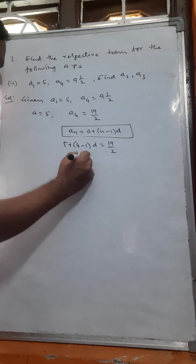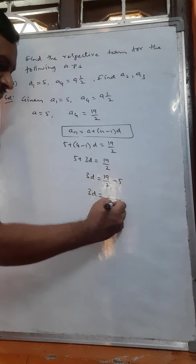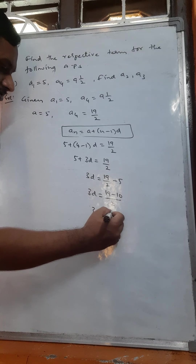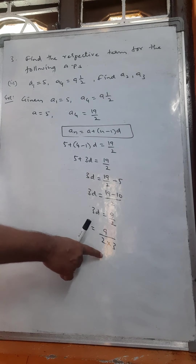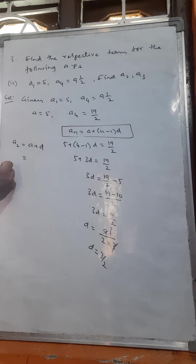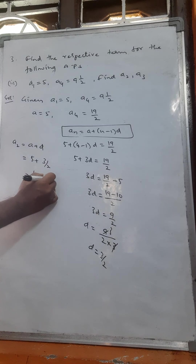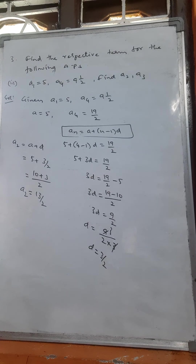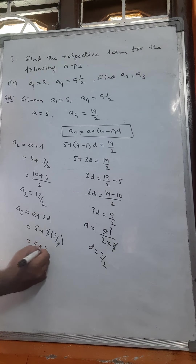Now find a2 and a3. a2 is equal to a plus d: 5 plus 3 by 2. LCM is 2, giving 10 plus 3, that is 13 by 2. So a2 is equal to 13 by 2. a3 is equal to a plus 2d: 5 plus 2 into 3 by 2. The 2s cancel, giving 5 plus 3, which is 8. So a3 is equal to 8.